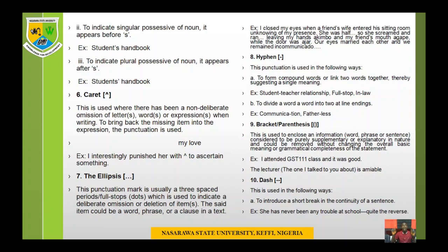The next punctuation mark is bracket, also called parenthesis. It is used to enclose information — a word, phrase, or sentence — that is purely supplementary or explanatory in nature and could be removed without changing the main expression. For instance: 'The lecturer (the one I talked to you about) is amiable.' You can say 'The lecturer is amiable' alone, but the bracketed phrase supplements by explaining which lecturer is meant.